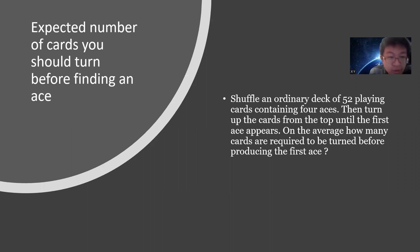I want to solve this problem because it's asking for the expected number of cards you should turn before finding an ace. The problem is: shuffle an ordinary deck of 52 playing cards containing four aces, then turn up the cards from the top until the first ace appears. On average, how many cards are required to be turned before you produce the first ace?